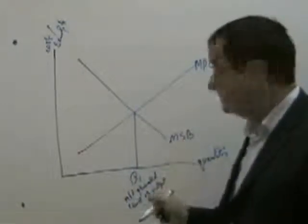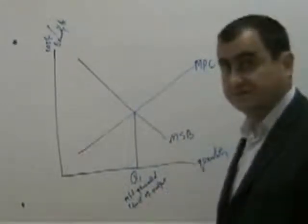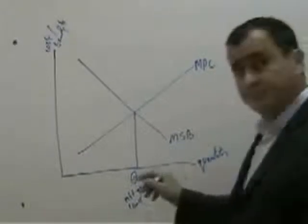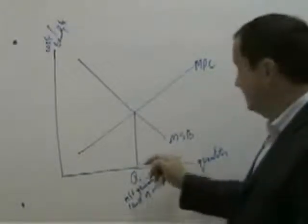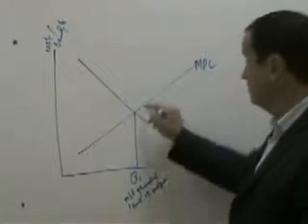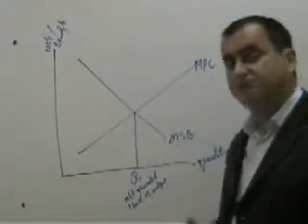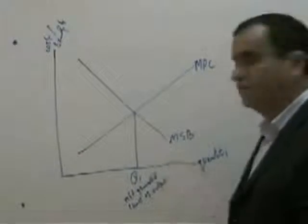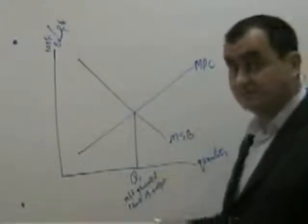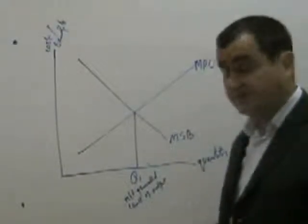That's the level of output that would be created if we left things to market forces. They wouldn't consume more than this because the next unit would create more costs than benefits. So even when only considering private costs and benefits, Q1 is the level of output that would be generated by the price mechanism.